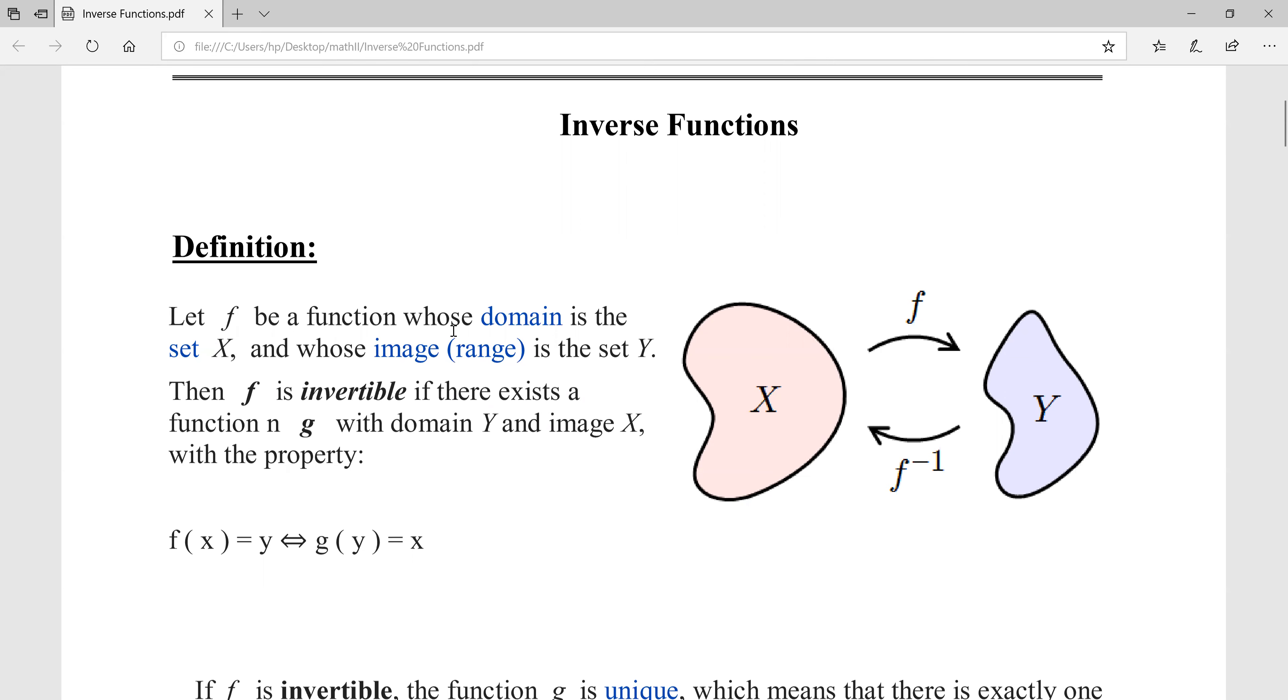Let f be a function whose domain is the set X and whose image is the set Y. Then f is invertible if and only if there exists a function g with domain Y and image X, with the property that f(x) = y if and only if g(y) = x. In other words, the function goes from the set X to the set Y, where X represents the domain and Y represents the range.